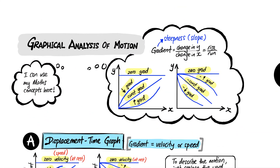Let's go through the basics of how to describe the motion of an object based on the graph. We're going to draw on your math knowledge — specifically finding the gradient of a graph of y against x. The gradient is rise over run, or the change in y over the change in x.